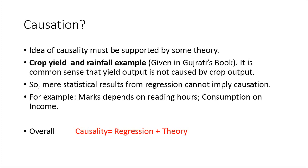We cannot assume that because common sense tells us rainfall cannot be dependent on crop yield. Similarly, other examples: marks of a student depend on reading hours, not vice versa; consumption of a person depends on income, not vice versa. Mere statistical results from regression — significant p-values, significant t-statistics — cannot imply causation.